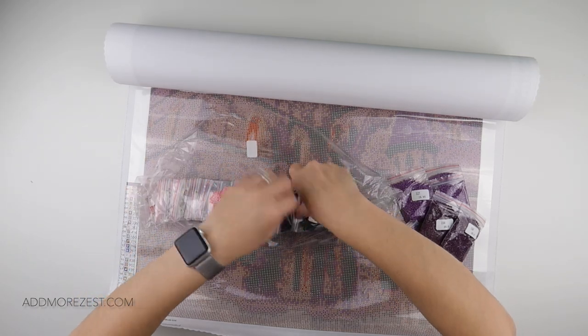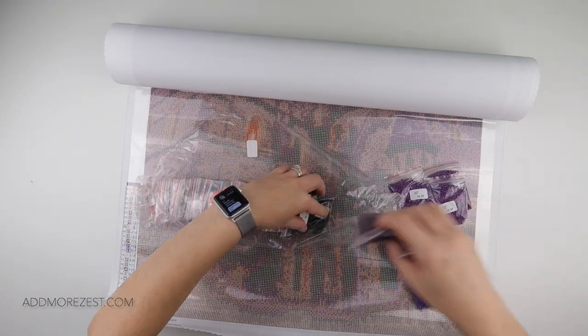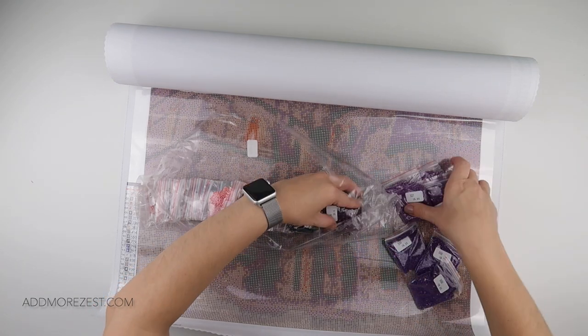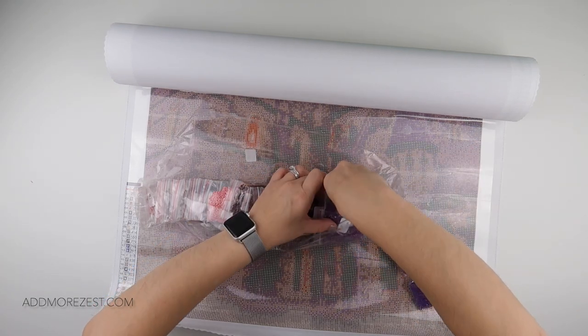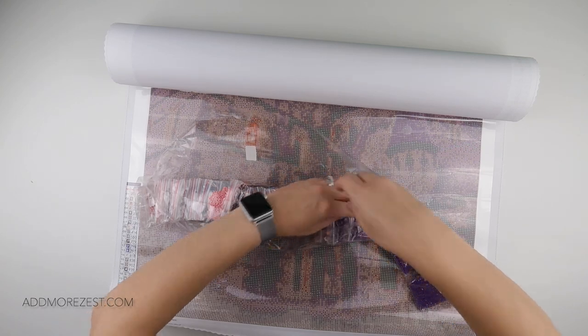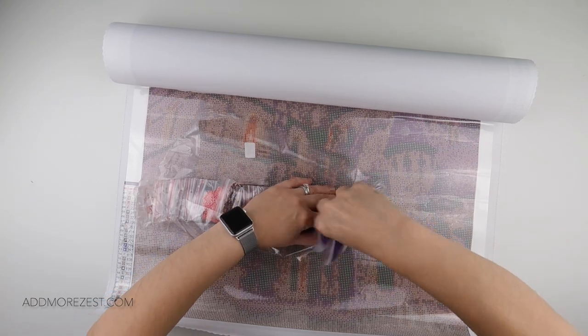A couple of bags of 3860, which is your brownie colors. A couple of 779, and then we get into all your other colors that make it up. I'm going to see if I can get these back in in some sort of fashion.